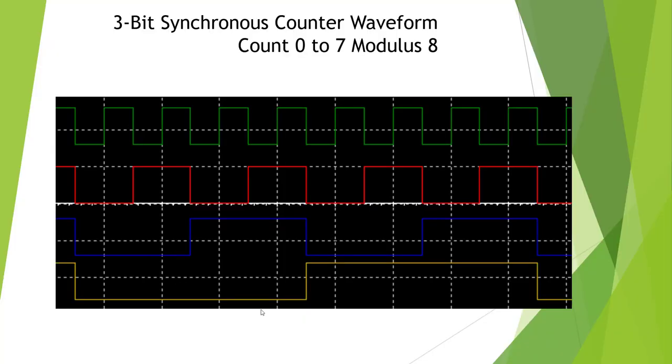Here we have the three-bit synchronous counter waveform. We start here at zero. Zero-zero-zero, one-zero-zero which is one, zero-one-zero is two, one-one-one is three, zero-zero-one which is four, one-zero-one which is five, zero-one-one which is six, one-one-one which is seven, and it resets at seven. So it goes from zero to seven, divide by eight.